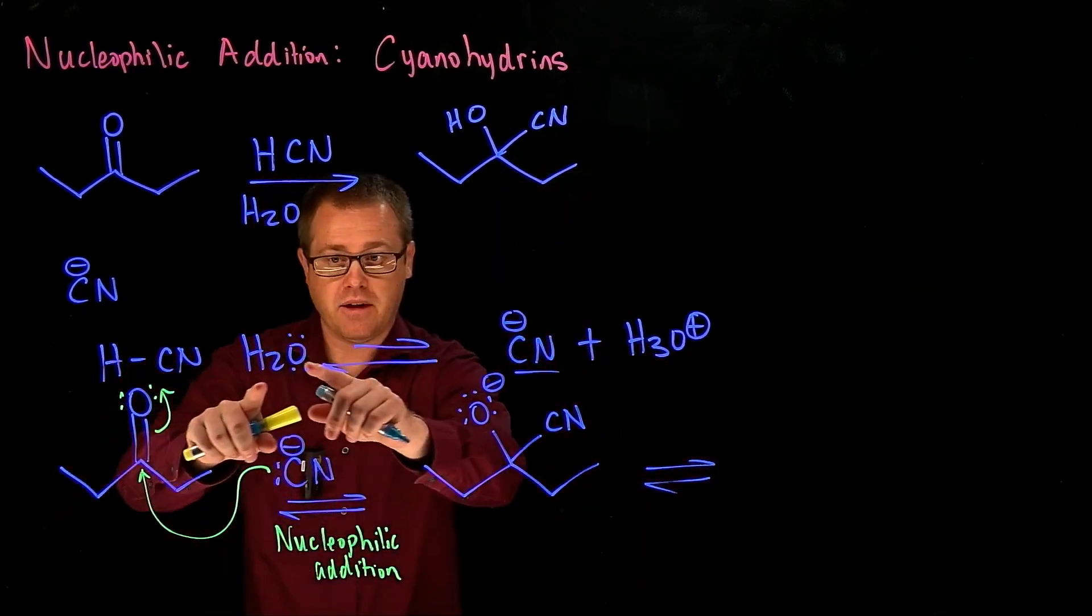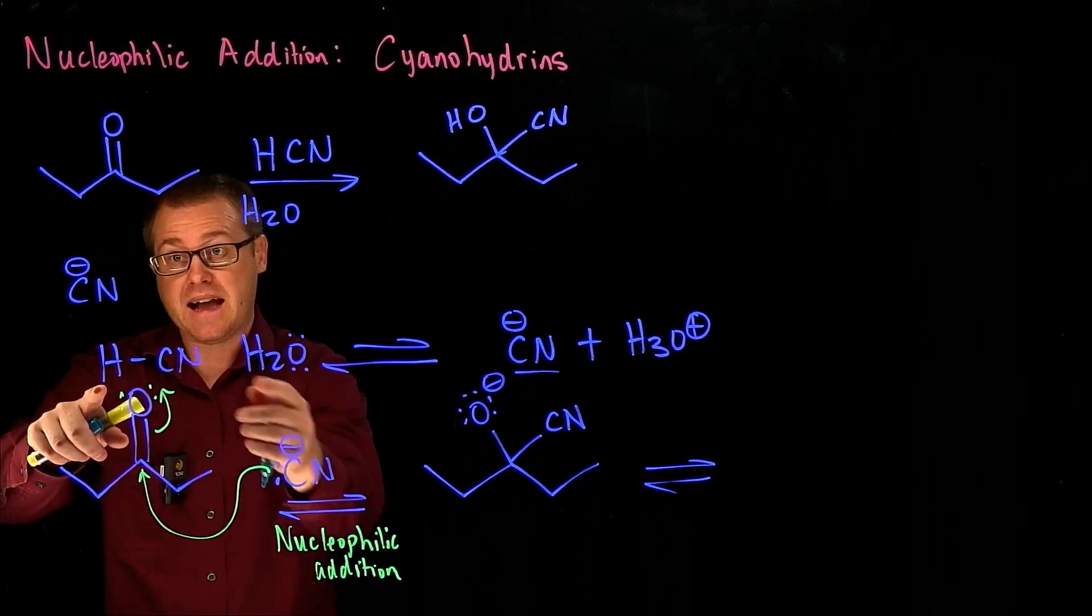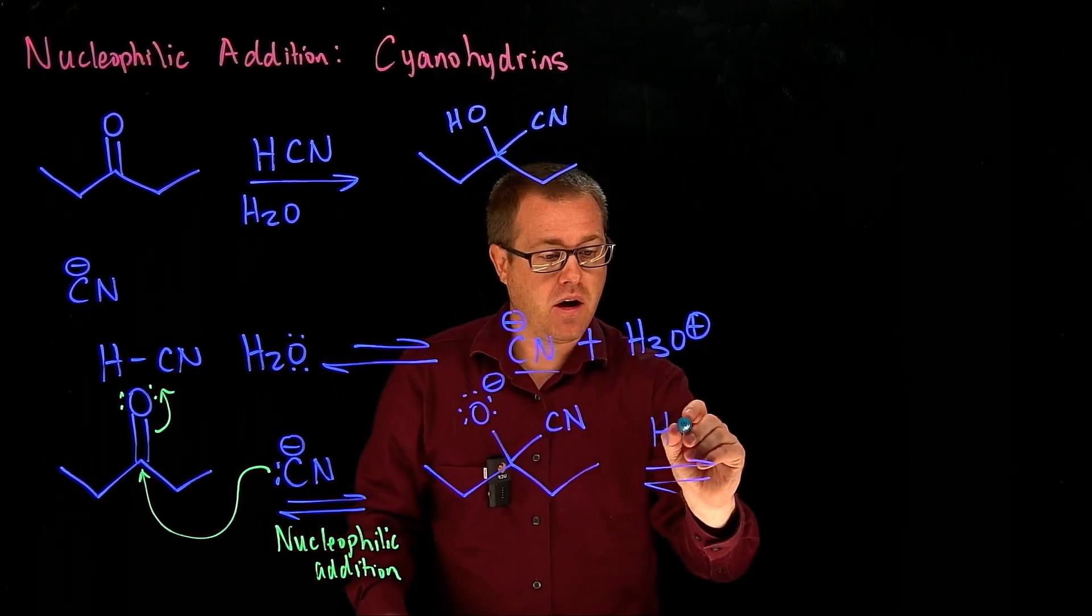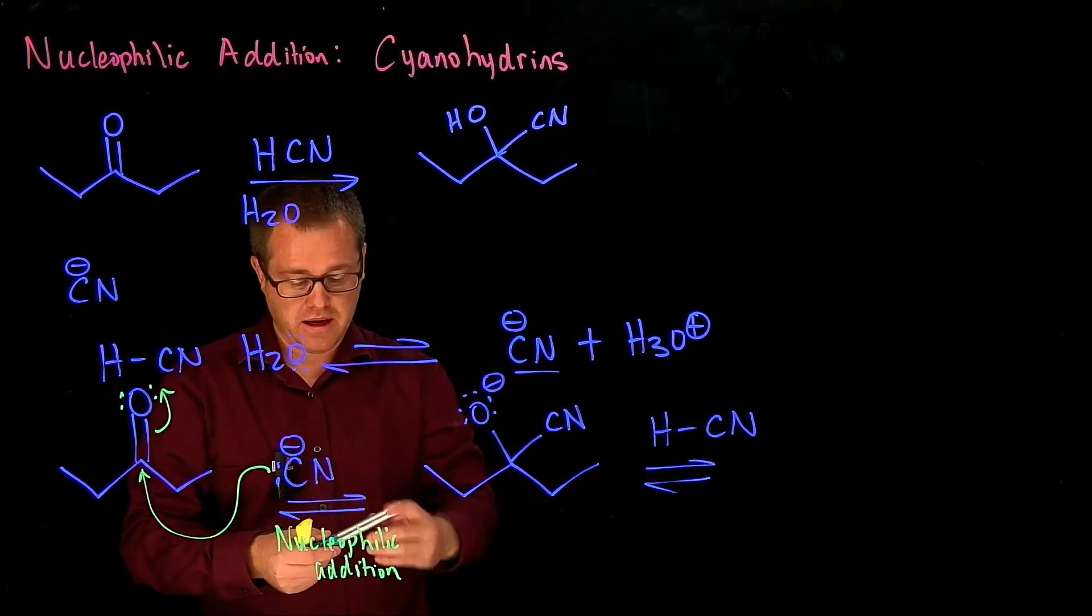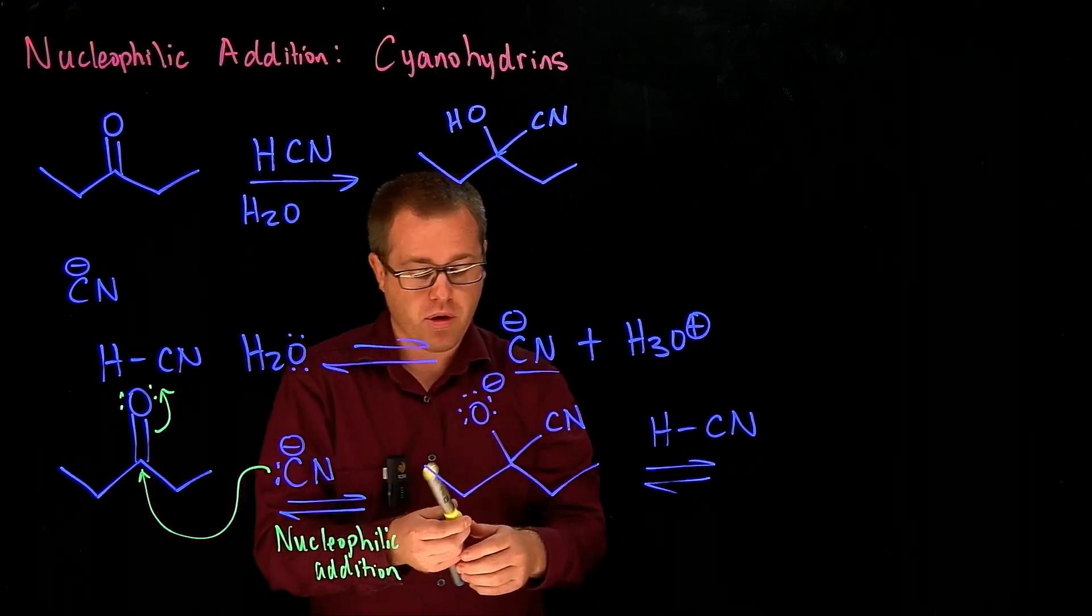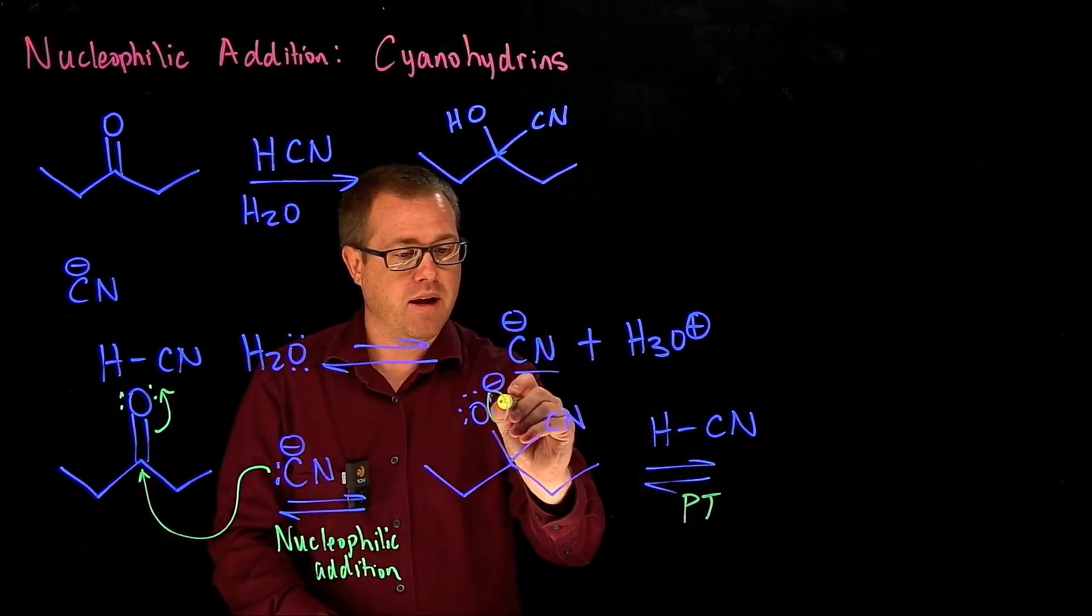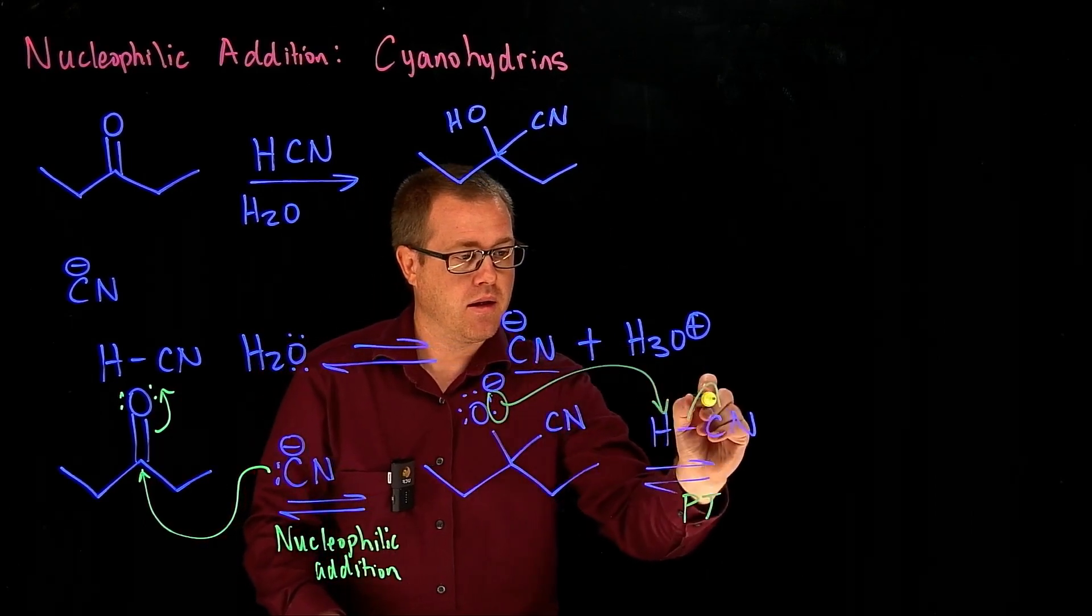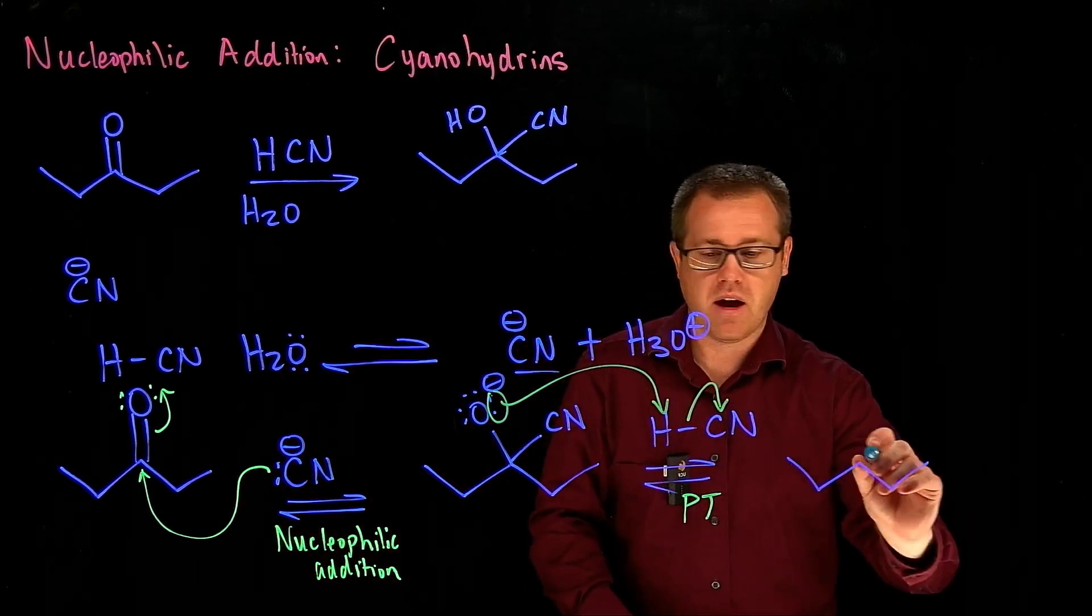Well, because equilibrium favors this side so much, we have an acid here. So we could invoke also that this alkoxide right here is going to do a proton transfer, taking that lone pair there, going like that, to generate our final product.